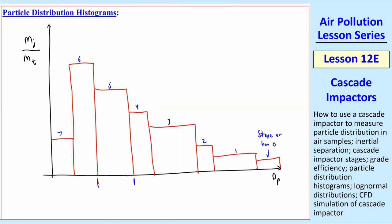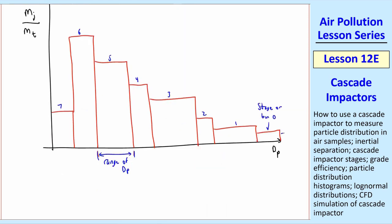And each stage, let's look at stage five here, has some range of DP. We'll get into more of the statistics of this later on at the end of the course. By the way, the pre-impactor might be here. Very large particles. That's sometimes even a cyclone or some other device that just gets rid of these particles.